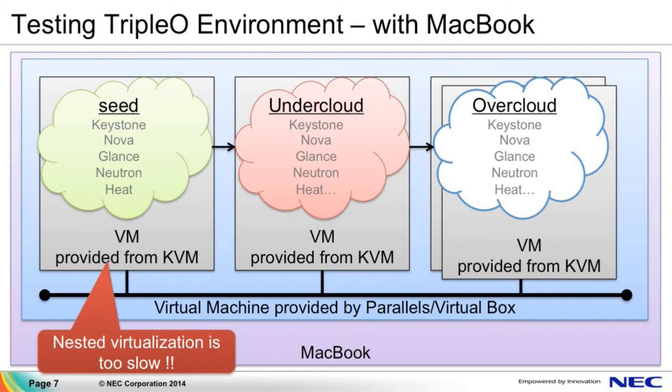Unfortunately, I use a MacBook to develop and test the Triple O environment. Mac OS doesn't support KVM, and Triple O Incubator's default behavior requires KVM to boot a virtual bare-metal. So I must use nested virtualization to test this, but nested virtualization is too slow. So I explored two architectures to solve this problem.